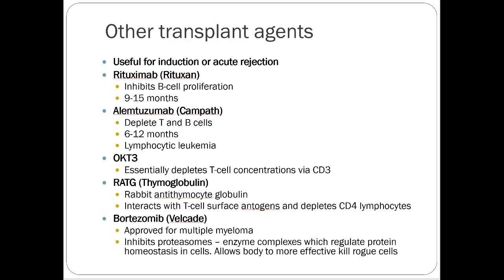Other agents — rituximab, alemtuzumab, OKT3, rabbit thymoglobulin, bortezomib — are used as adjuncts, for induction, or for salvage therapy. You don't need to know much about these specifically, just recognize that drugs ending in '-mab' would not be part of a routine daily maintenance regimen.